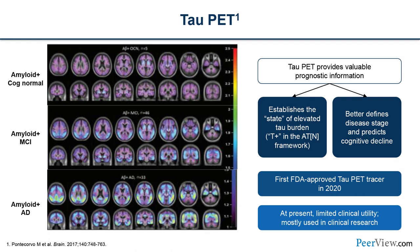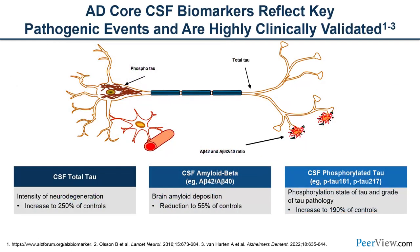Tau PET is FDA approved but has very limited clinical utility; it is mostly used in research. It is most commonly abnormal in people who are also amyloid-positive. Tau PET establishes the T component of the ATN framework, and tau correlates more strongly with disease stage and symptom severity than amyloid.